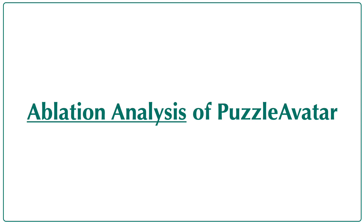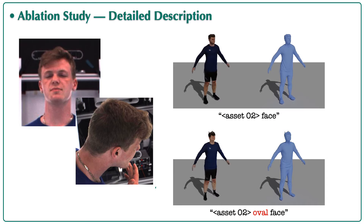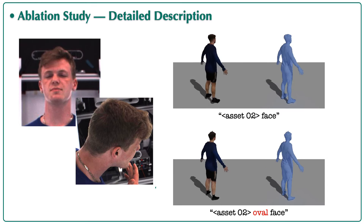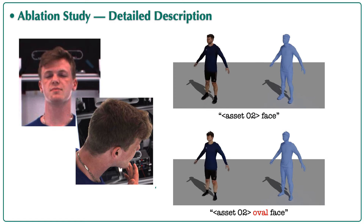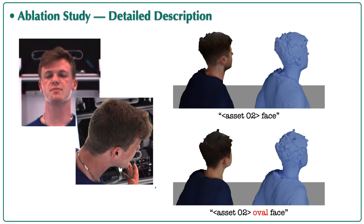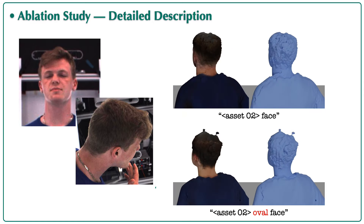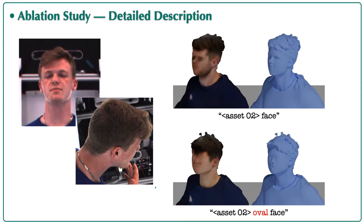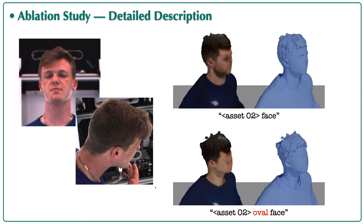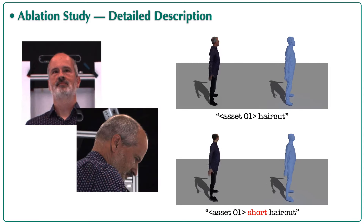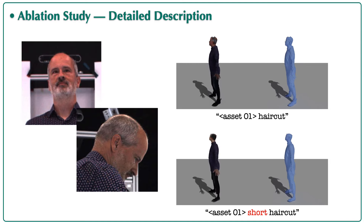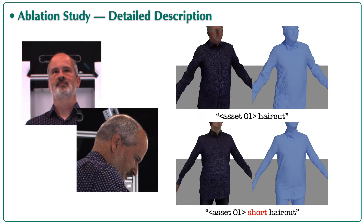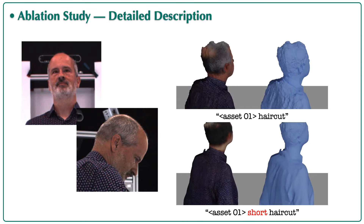Here we show ablation results on Puzzle Avatar. For instance, specifying an oval face can mislead the generation process and produce low-quality faces. In another example, the introduction of the term 'short haircut' alters the original hair colors. This suggests that detailed descriptions may conflict with our learned tokens due to guidance collapse.